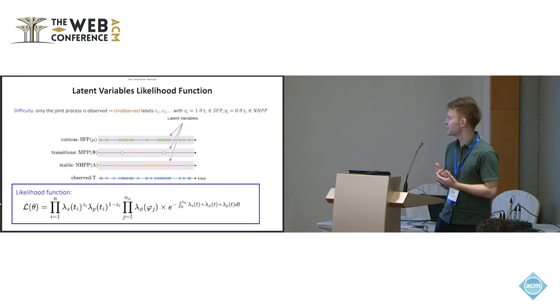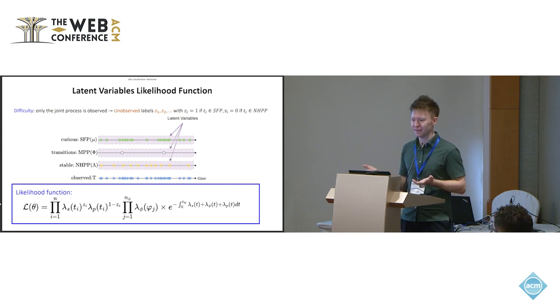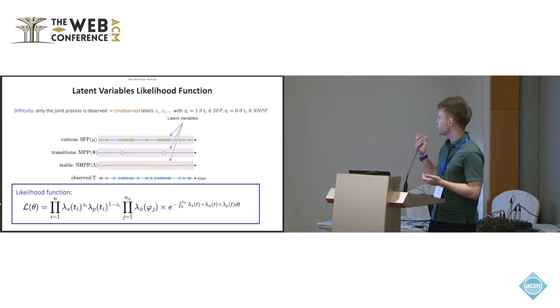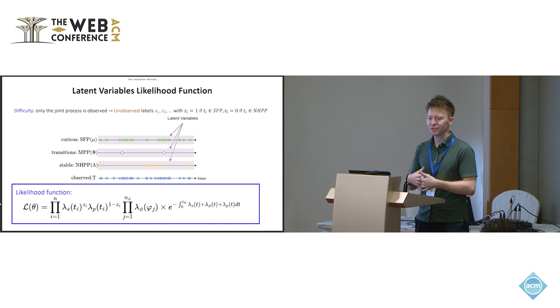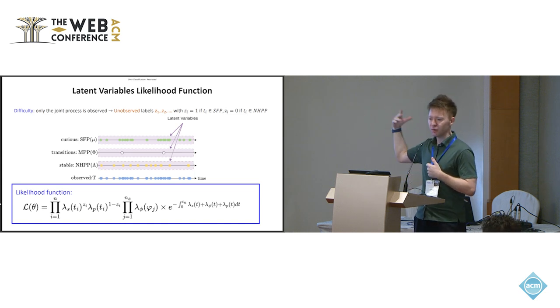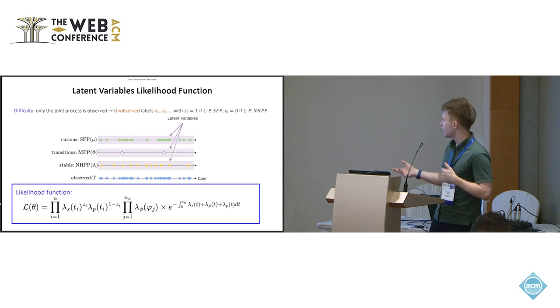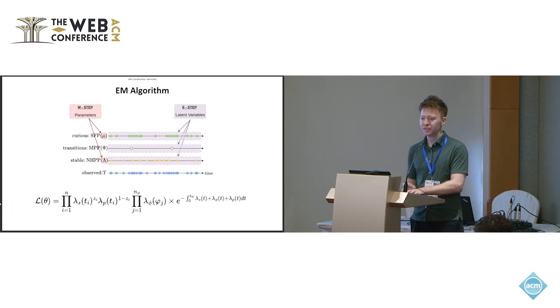So when it comes to inference, we have quite a few difficulties in the sense that most of it, the only thing we observe is basically just the timestamps. So we don't have any information about which visits came from curious users, which visits came from stable users, fans of the topic. So we have a lot of latent variables, which are the labels, as in which timestamps come from which audience. And at the same time, we've got the transitions, which are also latent variables. So it's possible to write the likelihood function, but it depends on all of these high dimensional latent variables. So it sounds like it's a pretty good candidate for an application of the expectation maximization algorithm. So this is what we're going to do.